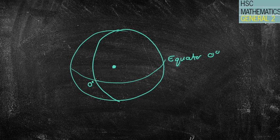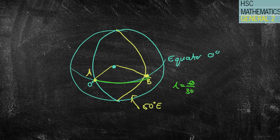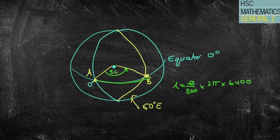Let's say we have point A at the Greenwich Meridian and point B at 50 degrees east — obviously to the right-hand side of the Greenwich Meridian. We've got our sector, with the arc length between them. The formula gives us θ/360 × 2π × 6,400, and since this is zero degrees to 50 degrees east, our angle is 50 degrees. So: 50/360 × 2π × 6,400.